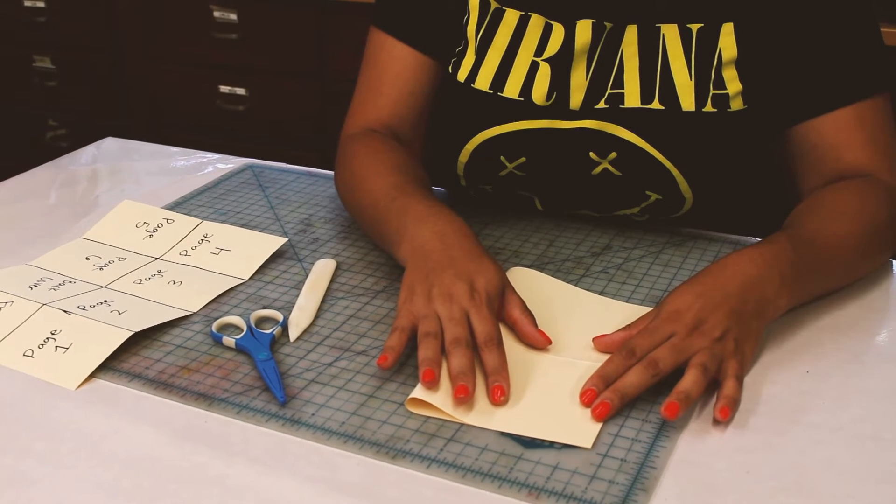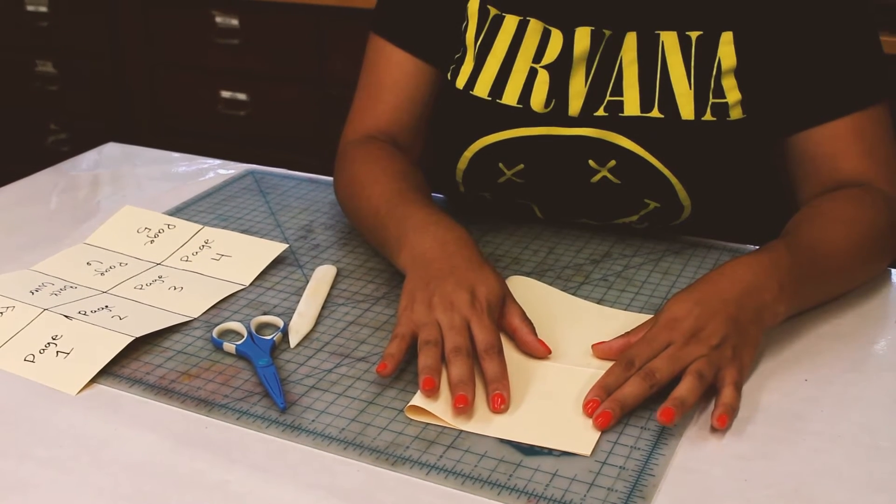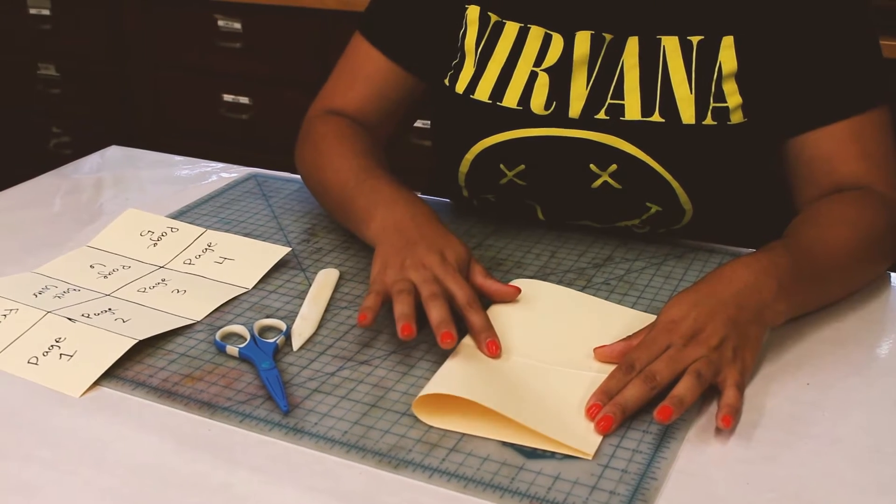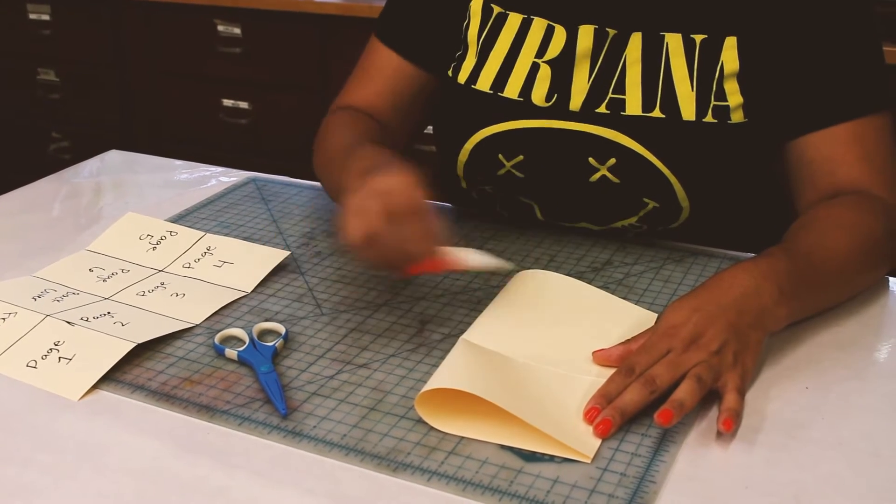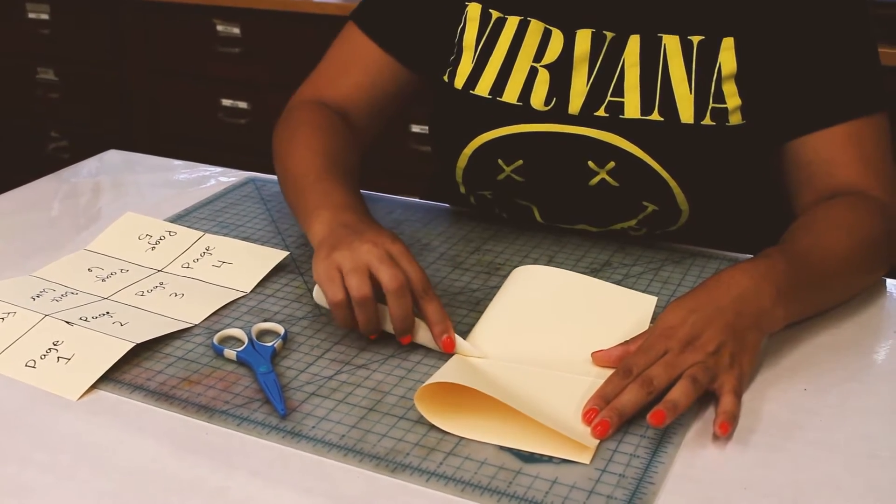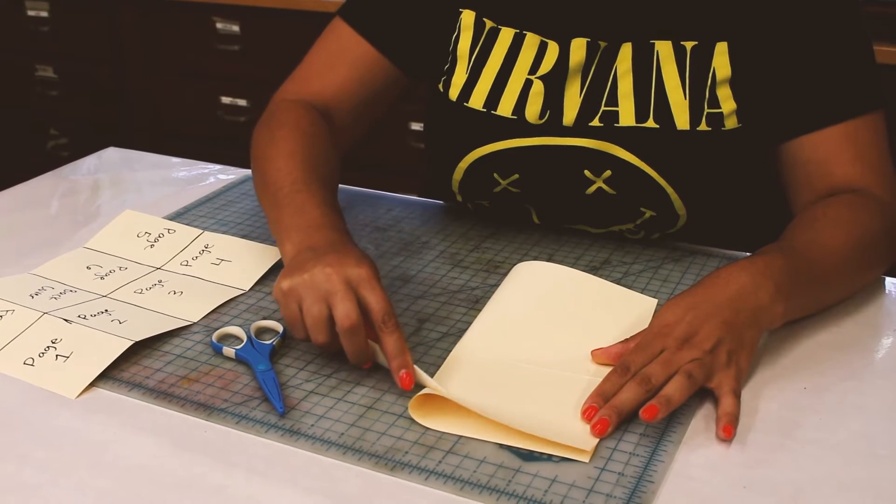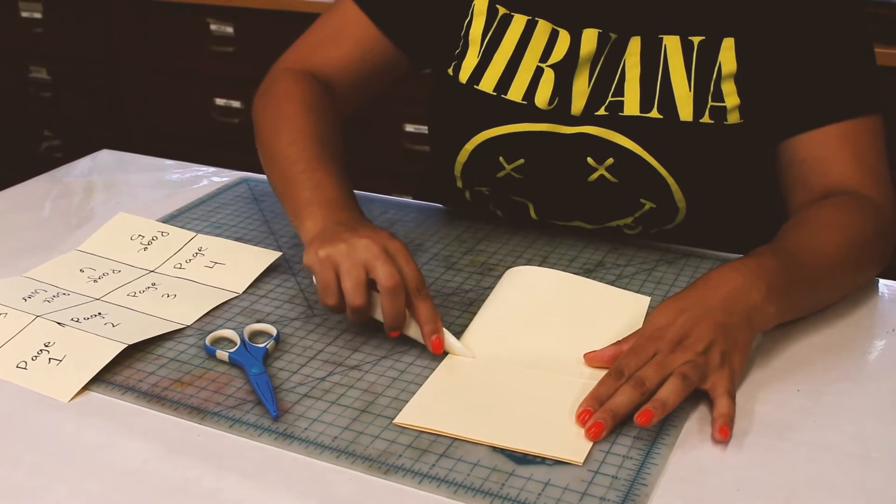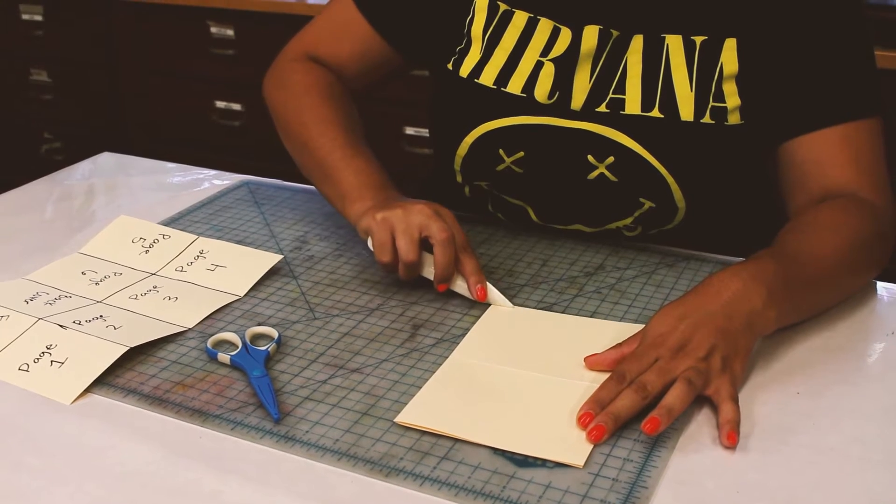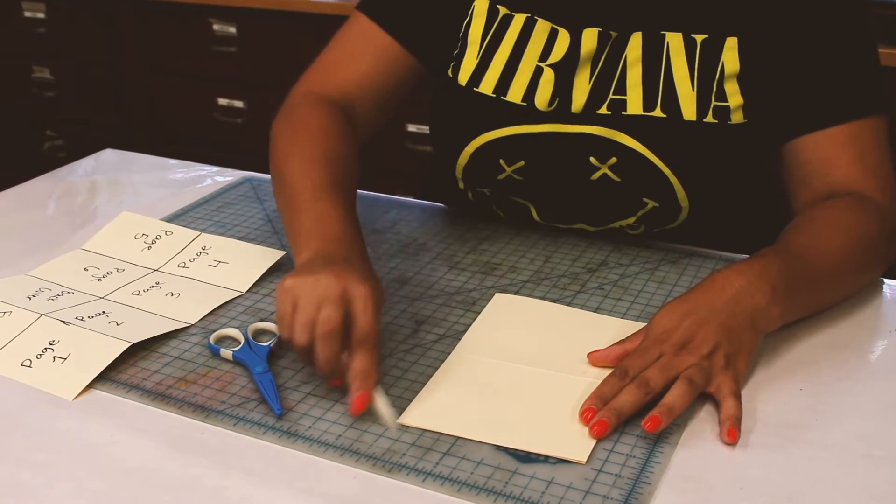And then if you need to refold it, it just ensures that there's not weird pages sticking out of your zine. So again you'll put a line down the middle, you'll go down one side, down the other.